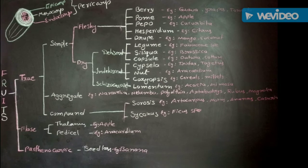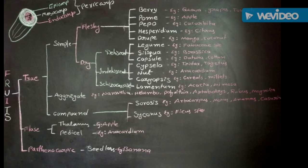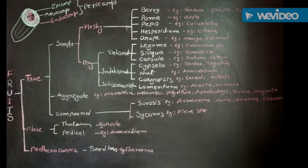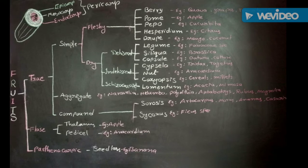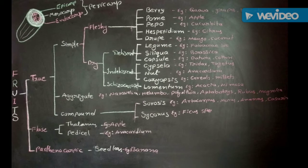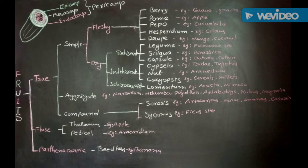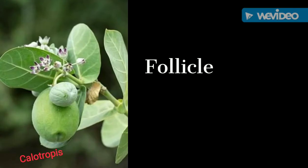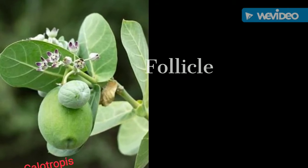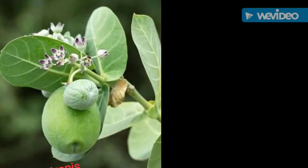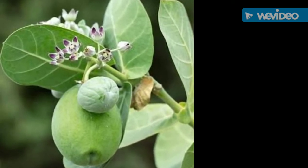In this way, different types of fruits were discussed in our last classes. But in this class I want to discuss some additional fruits, in addition to the flowchart. The first one is follicle — F-O-L-L-I-C-L-E. Example: Calotropis gigantea. It is developed normally from a superior ovary.